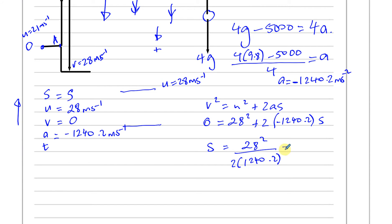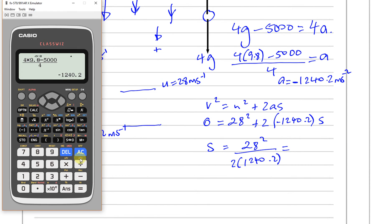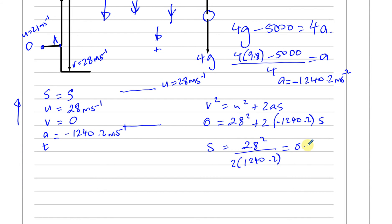So that should give us our distance that we need. We have 28 squared over 2 times 1240.2, and equals 0.316. Let me just write it a few more places just to show you. And then, our final answer, therefore, the distance that it's traveled, is 0.316, or if we want to, we can write it as 0.32, as we used G in our calculations.